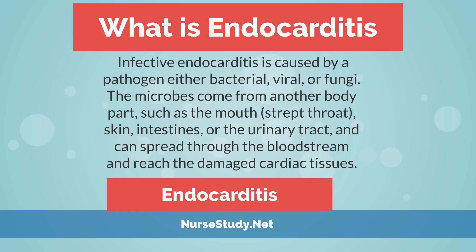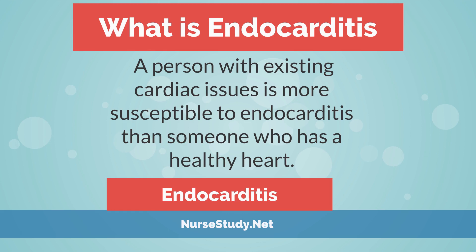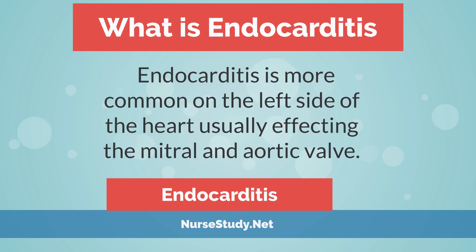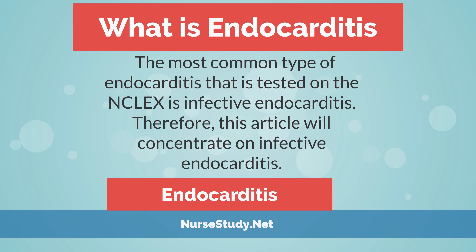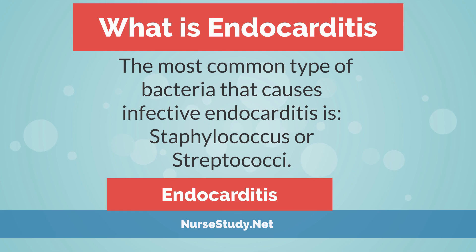The microbes come from another body part, such as the mouth (e.g., strep throat), skin, intestines, or the urinary tract, and can spread through the bloodstream and reach the damaged cardiac tissues. A person with existing cardiac issues is more susceptible to endocarditis than someone who has a healthy heart. Endocarditis is more common on the left side of the heart, usually affecting the mitral and aortic valve. The most common type tested on the NCLEX is infective endocarditis, and the most common causative bacteria are Staphylococcus or Streptococci.